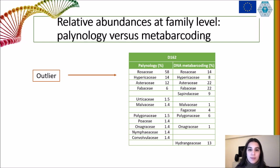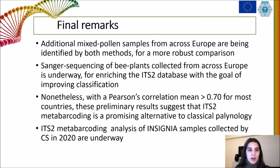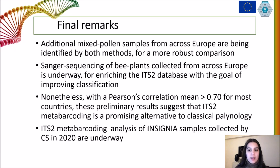Although these preliminary results suggest that ITS2 metabarcoding is a promising alternative to classical palynology, we are sequencing bee-visited plants to enrich the ITS2 database in the hope of improving the taxonomic classification. There is a lack of samples in Portugal, France, and Latvia, and so more mixed pollen samples are currently being identified for both methods for a more robust comparison, also with the introduction of new European countries. The second year of INSIGNIA is underway and the samples collected throughout the year are being prepared and analyzed.